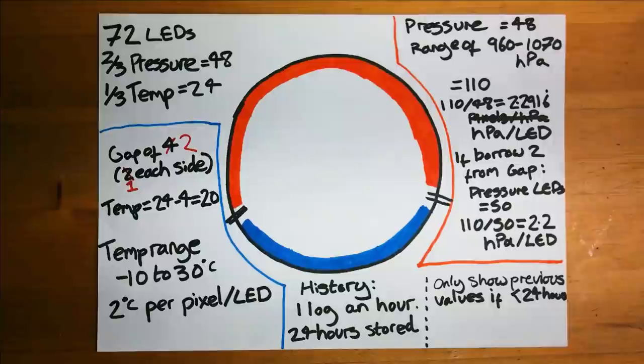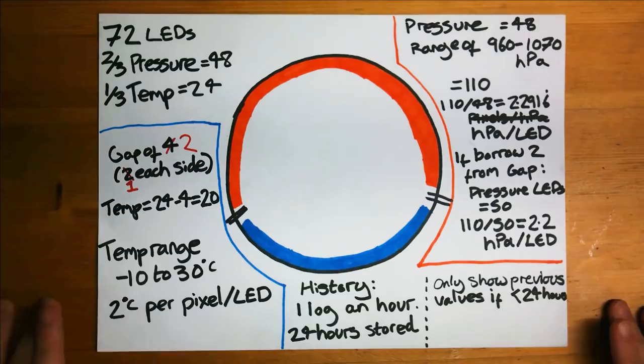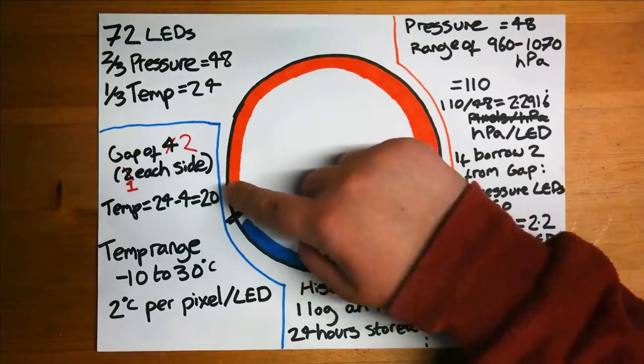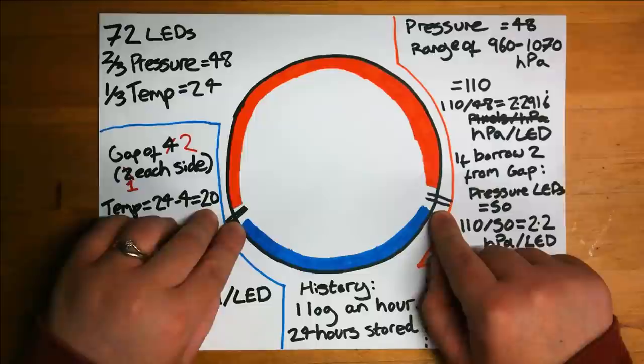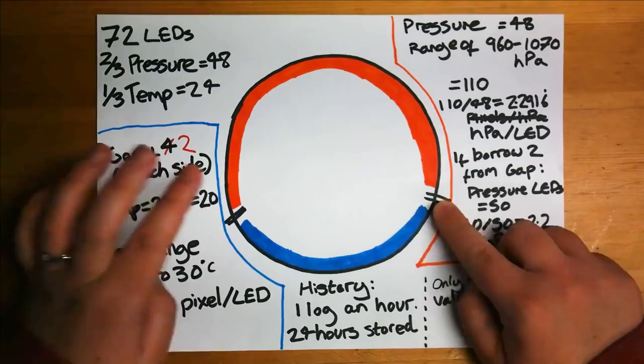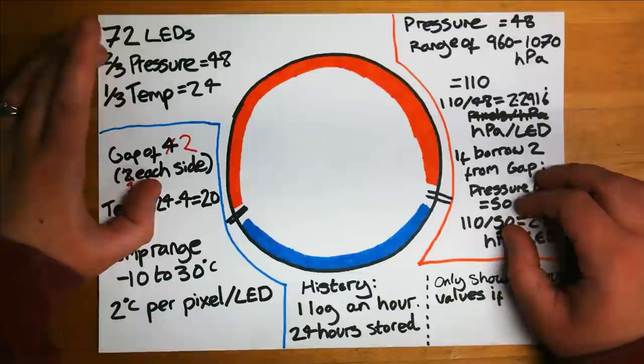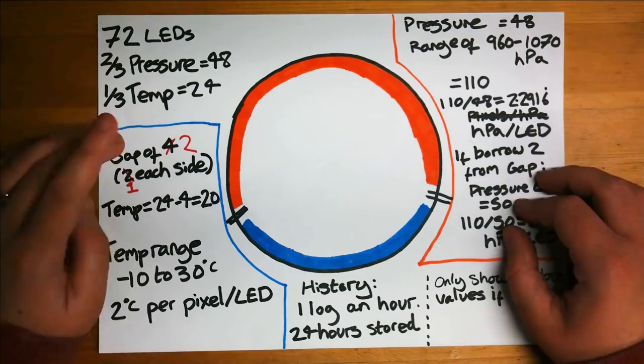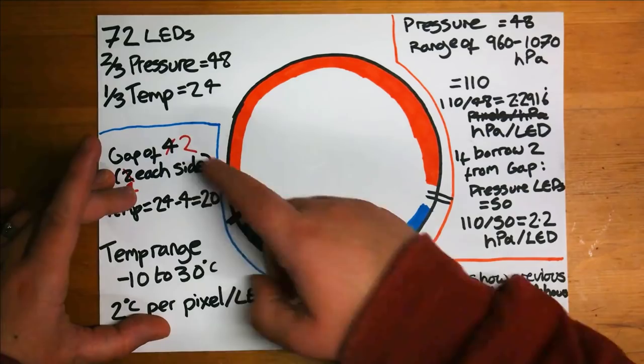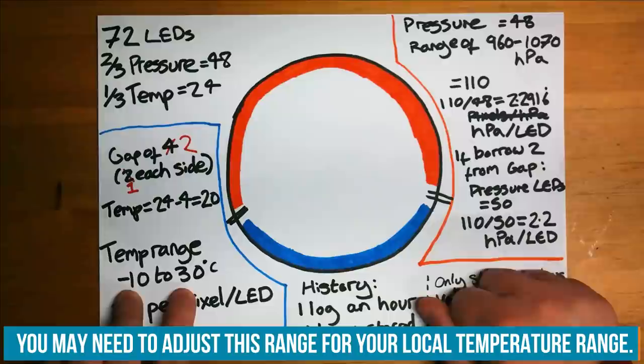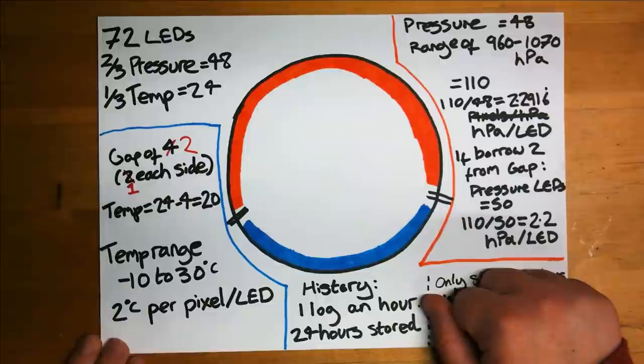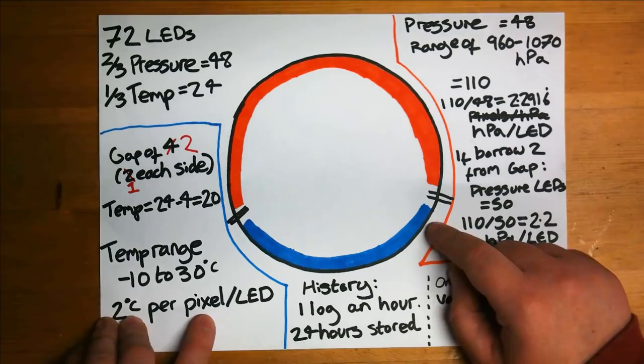Before I started coding I made myself a quick sheet of what I was planning to do. I've drawn the barometer in the middle and a ring of neopixels around the outside. I've decided that two thirds of it is going to be the pressure and the bottom third will be the temperature. I will have a gap of one LED in between the two to separate that off. So we've got 72 LEDs. Two thirds of that is pressure and a third is temperature. For the temperature I've changed it now so we've only got the gap of two, one each side. That gives us 20 LEDs. We're going to display a temperature range of minus 10 to 30. For the area I live in that is the expected temperature range. That gives us we'll be displaying two degrees C on each pixel over the temperature.